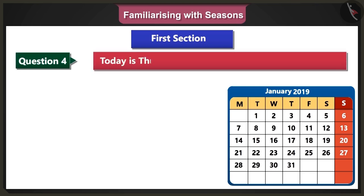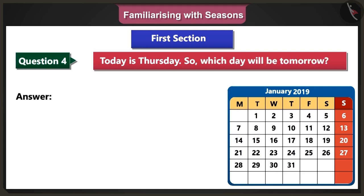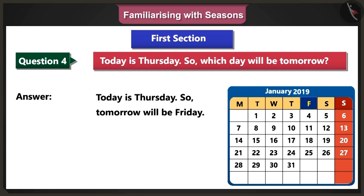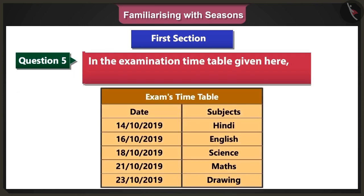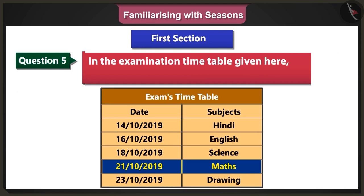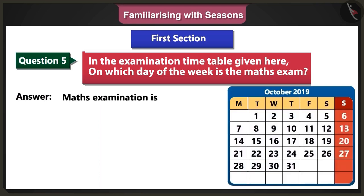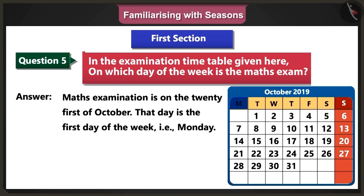Fourth question: Today is Thursday. So, tomorrow will be which day of the week? Answer: Today is Thursday, so tomorrow will be Friday. Fifth question: In the examination timetable given here, on which day of the week is the maths exam? Answer: Maths exam is on the 21st of October. That day is the first day of the week, that is Monday.